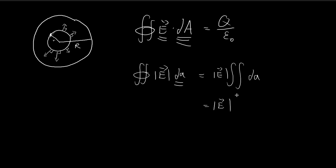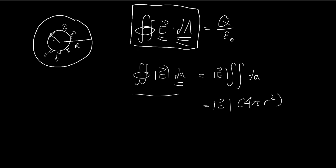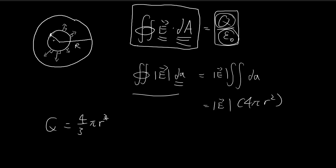If you add up all the tiny bits of the surface over the entire spherical shell, you just get the surface area of the spherical shell, which is equal to 4π small r squared. On the right-hand side, we have the amount of charge enclosed divided by epsilon. The charge enclosed is equal to the volume enclosed by the spherical shell — which is (4/3)π r cubed — multiplied by the charge density rho.